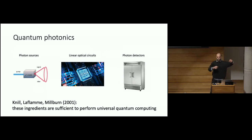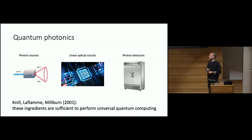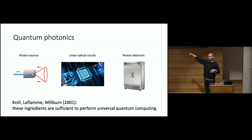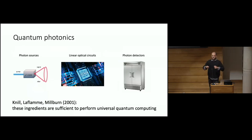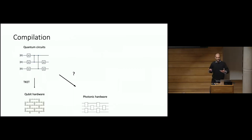linear optical circuits — linear in the sense that there are only linear interactions between the photons, so these are basically interferometers where the photons only interfere — and at the end you observe where they come out from these circuits, usually by taking a fibre cable and plugging it into a fridge at zero Kelvin where a spike in the computer tells the physicist the photon has arrived. So these three ingredients would be enough to do universal quantum computing, and if this scheme works, we should be able to compile any high-level specification of a quantum algorithm onto a photonic circuit.